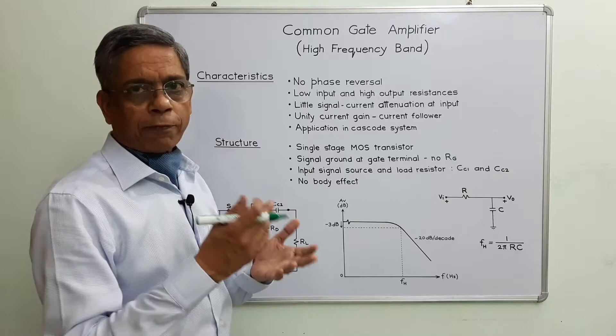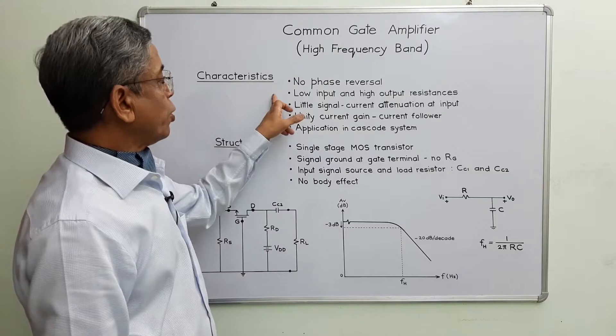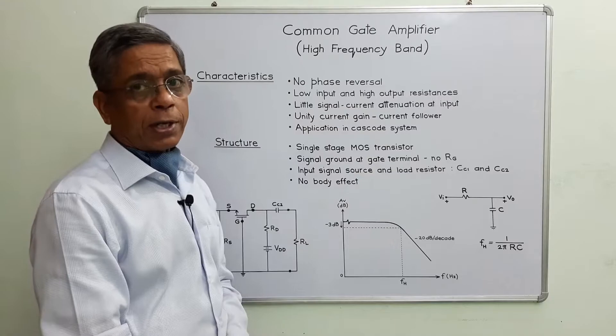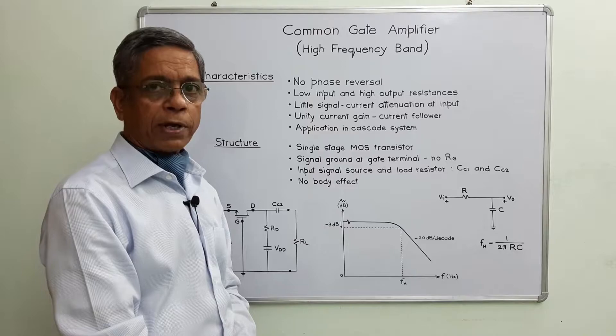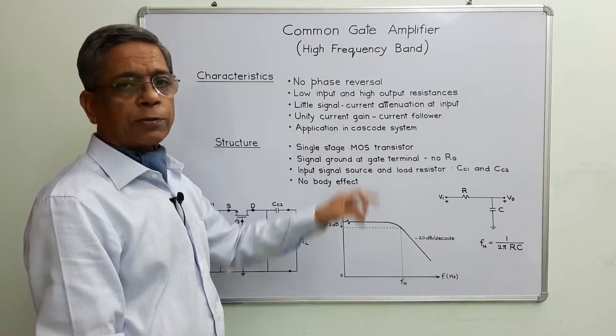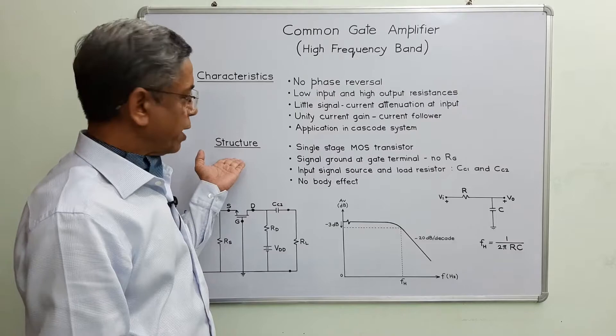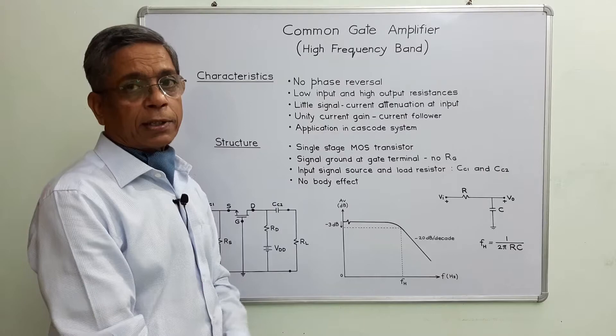The characteristics of common gate amplifiers: there is no phase reversal between input and amplified output waveform. It has low input and high output resistances, which is why it has little signal current attenuation at the input. It has unity current gain, which is why the common gate amplifier is better known as a current follower. It has found application in cascode systems.